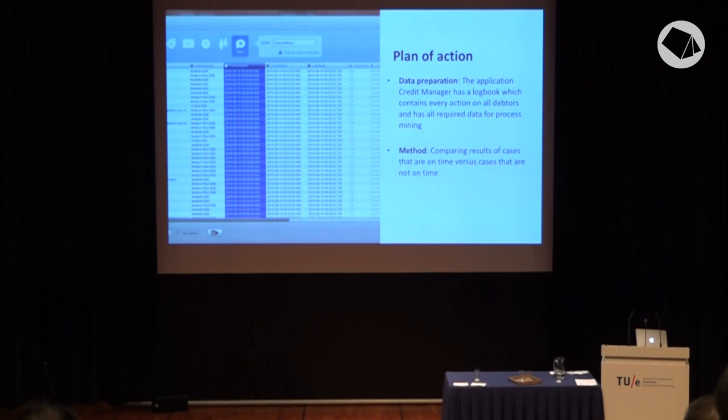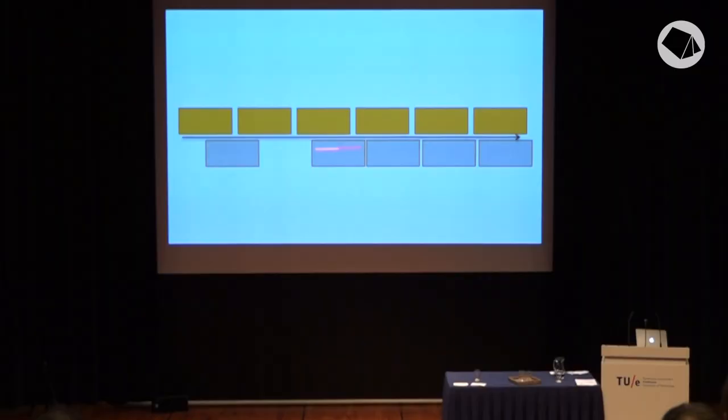Plan of action: make a query, extract the data from the data warehouse, load it into credit manager, then do a simple comparison between cases on time and cases not on time — hoping to find some difference. First, I went to talk to domain experts who are actually executing this process. They told me it's an automatic, linear process — no case can go back in time — with only some optional steps that are sometimes done and sometimes not. So I said, we'll process mine this.